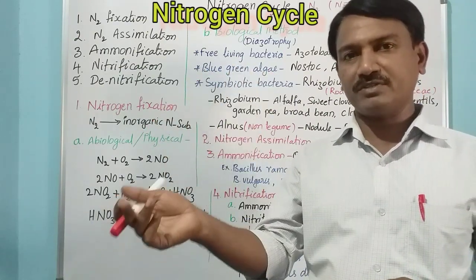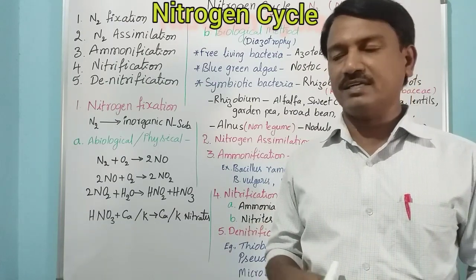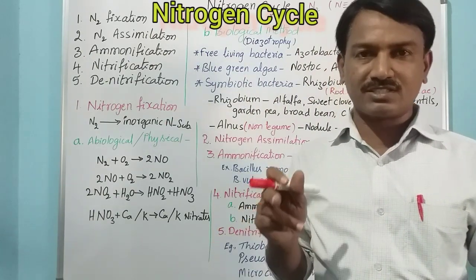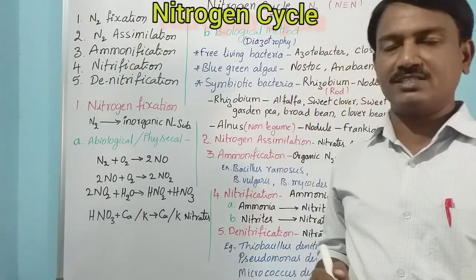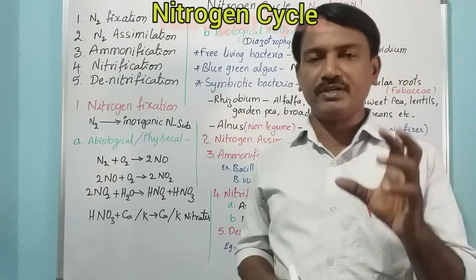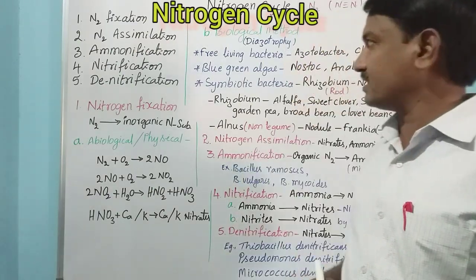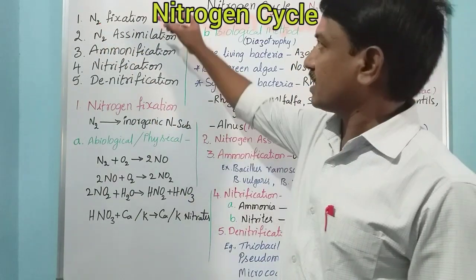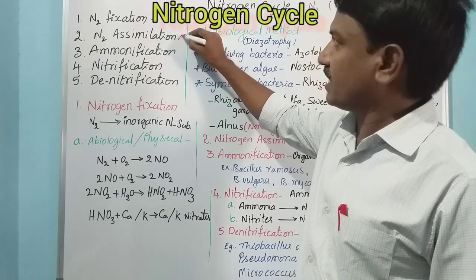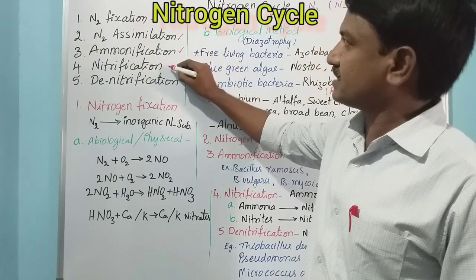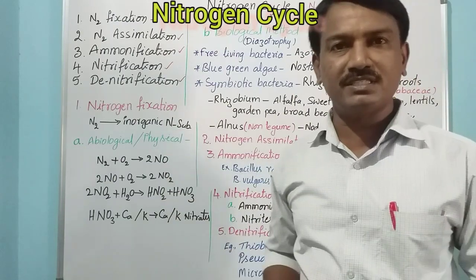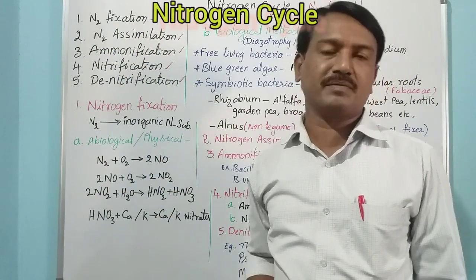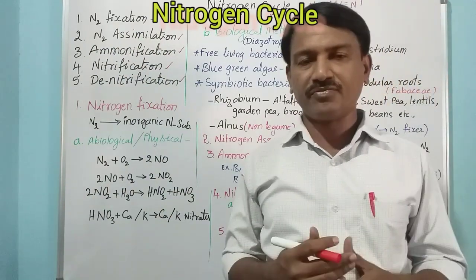Nitrogen from the atmosphere enters into the soil, from the soil it goes to plants, and after the lifespan of the plant, the decaying material releases nitrogen back into the atmosphere. It is a continuous process, which is why it is called the nitrogen cycle. In this cycle there are five steps: number one, nitrogen fixation; number two, nitrogen assimilation; number three, ammonification; number four, nitrification; and number five, denitrification.